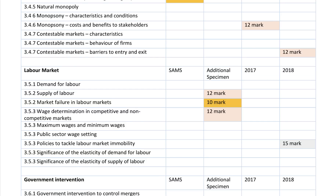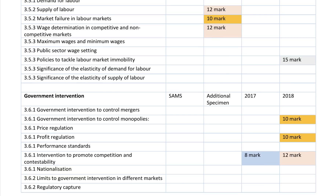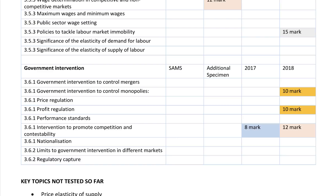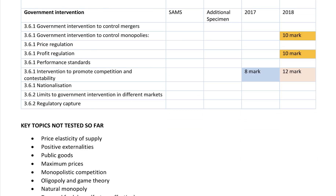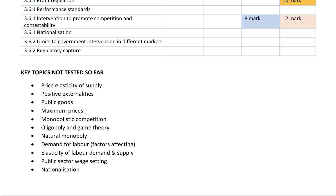Government intervention at a slightly higher level — not just year 12 indirect taxes and subsidies, but price capping, profit regulation, and regulatory interventions of different types — it always comes up. Nothing yet on nationalization or regulatory capture. This is not question spotting, by the way — this is just stating the obvious from the 2017 and 2018 papers and the sample assessment materials.